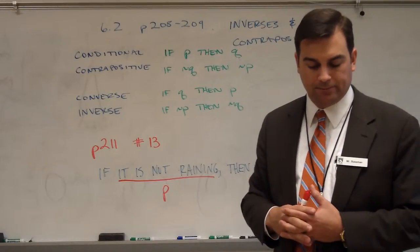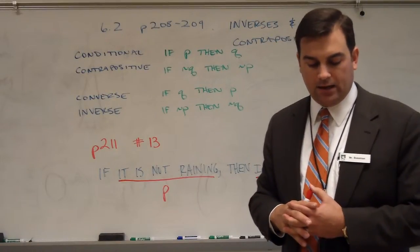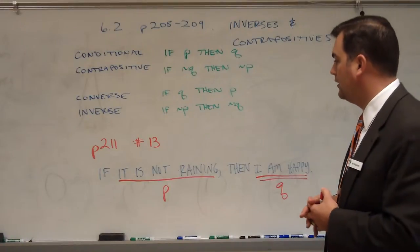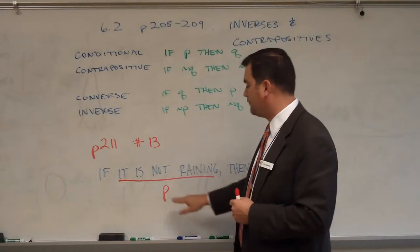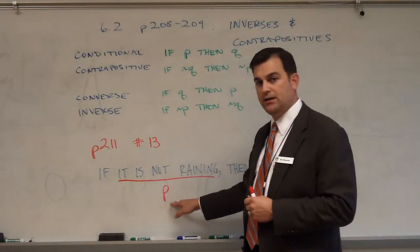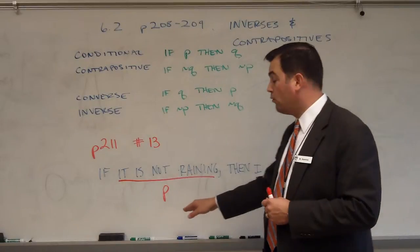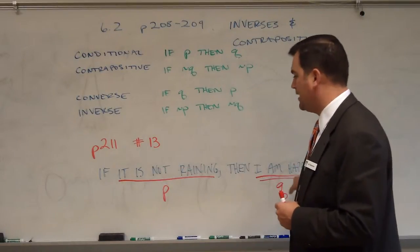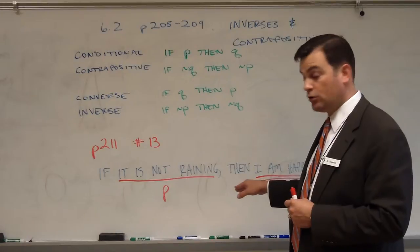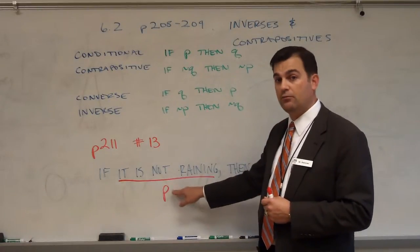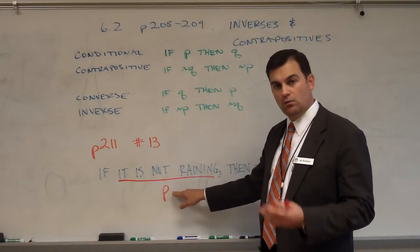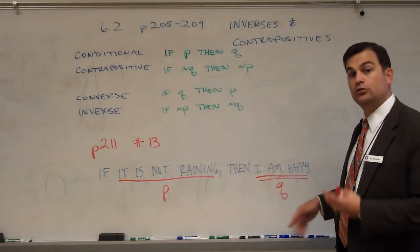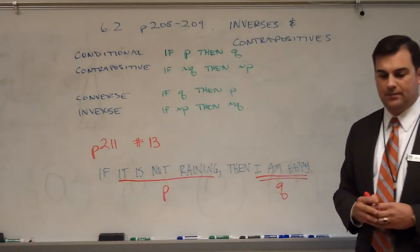Let's take a look at letter B: it is not raining. 'It is not raining' is affirming the hypothesis P. Well, given the conditional — if it is not raining, then I am happy — if I am told that it is not raining, then I would conclude: I am happy. So my conclusion would be that I am happy.